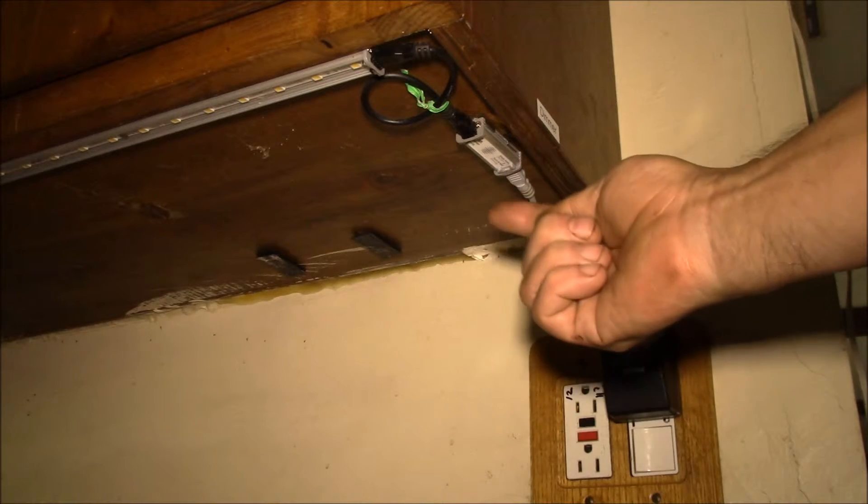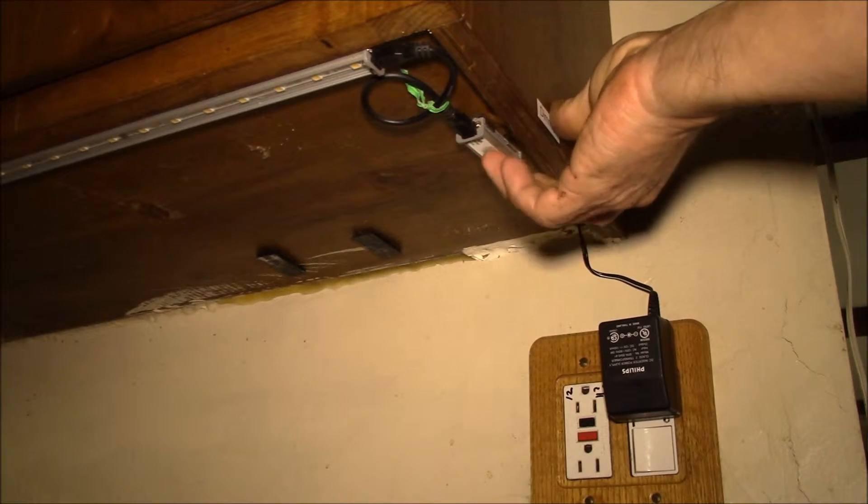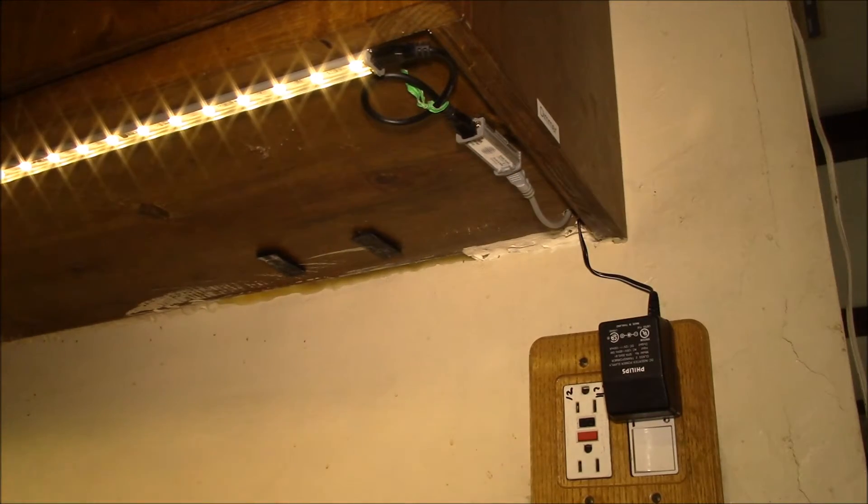Right under here you can see I've got a touch control dimmer for the under cabinet lighting. I've just turned on the lighting - it picks up a little flicker in the video camera because that's a pulse width modulated dimmer and I have it dimmed down actually quite low. I think there's 35 watts of LED.